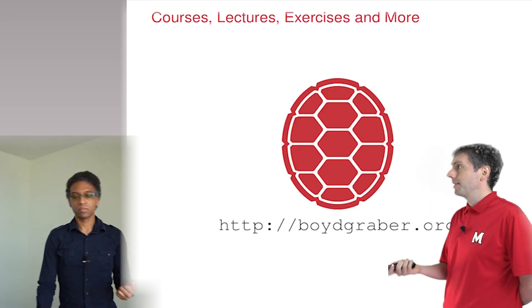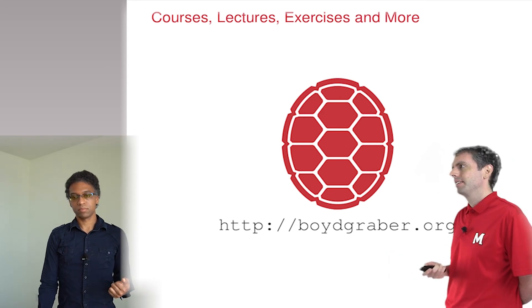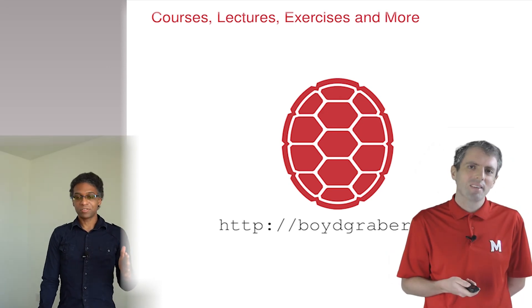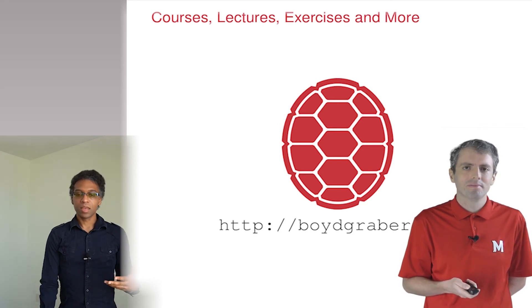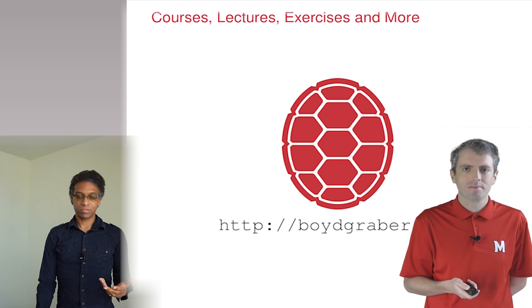That would be a matrix that reverses another matrix. Right. We call A inverse, written as a to the negative 1, the inverse of matrix A. And A times A inverse gives us the identity matrix.